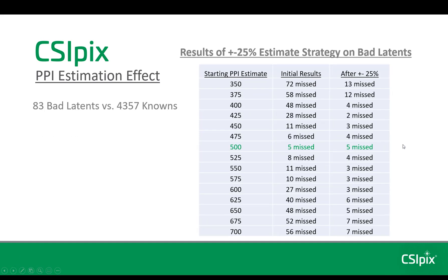This is the result of the strategy on the bad latents. The improvement doesn't add anything when your estimate is already good, but the improvement is much greater as you get further away from the actual resolution. At 350 PPI, it went from 72 missed to 13. At 700 PPI, it went from 56 missed down to 7. So it helped with these a lot too.